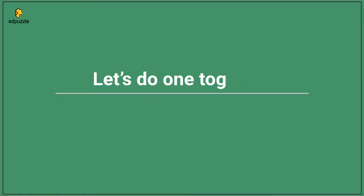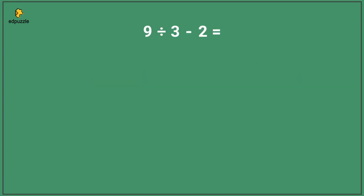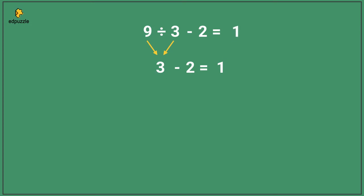Now let's try this problem together. In this problem, we must first divide. What is 9 divided by 3? 9 divided by 3 equals 3. Now we must remember to bring down the remaining items — the minus symbol and 2. All we must solve now is 3 minus 2, which is 1. So the value of this expression is 1.